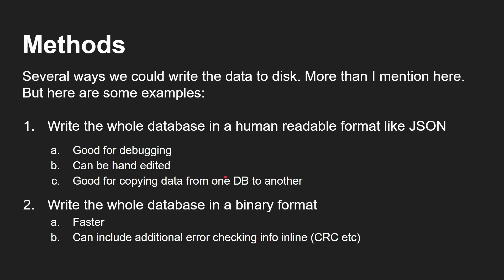There are several ways of writing data to a disk. You could write the whole database in a human-readable format like JSON — that's good for debugging, hand editing, copying from one DB to another, even emailing it around. It's a well-known format. You could also write the whole database in a binary format, which is much faster — no curly brackets or commas — and you can include additional error-checking information like checksums.